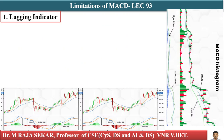Limitations of MACD: first, it is a lagging indicator. Since MACD is based on moving averages, which are inherently lagging, it reacts to past price movements and may generate signals after the trend has already started, leading to delayed entries or exits. Second, it produces false signals — MACD can produce false buy or sell signals, especially in sideways or choppy markets, with frequent crossovers in low volatility conditions.